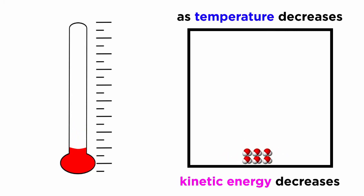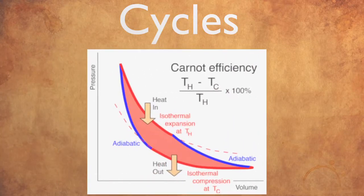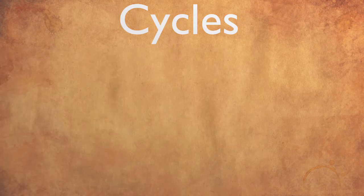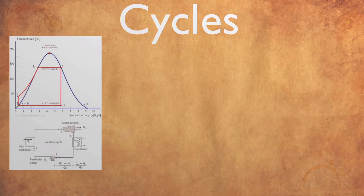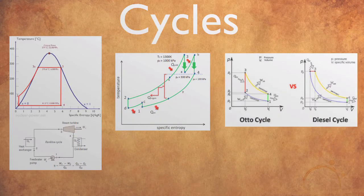And finally, thermodynamic cycles — here's where we put it all together. We identify the Carnot cycle, which in turn leads us to Carnot efficiency, or the maximum efficiency between two heat reservoirs. Eventually we branch off into other cycles as well: the Rankine or steam engine cycle, the Brayton or jet engine cycle, the diesel cycle, and the Otto or gasoline engine cycle.